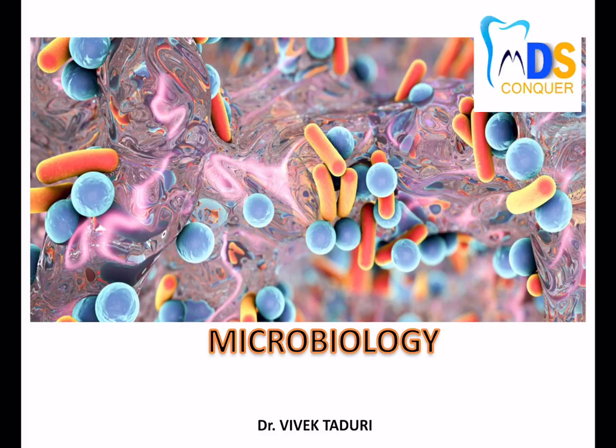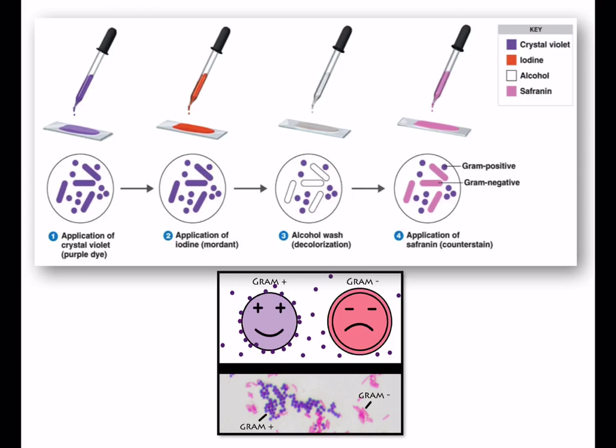Hello everyone, hope you all are doing good. This video mainly focuses on staining techniques and the culture media used for bacteria. When it comes to staining techniques, gram staining is the most commonly used for differentiating the large group of bacteria — that is gram positive and gram negative. The procedure is important to know, and there are four steps present in gram staining.